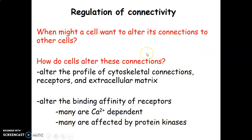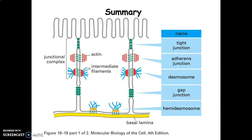Regarding regulation of connectivity: when might a cell want to alter its connections with other cells? Cells can alter the profile of cytoskeletal connections, alter their receptors and extracellular matrix, and alter the binding affinity of receptors. Many connections are calcium-dependent and are affected by protein kinases. Tight junctions seal neighboring cells. Adherens junctions attach onto actin filaments. Desmosomes contain desmogleins and desmocollins. GAP junctions contain connexins with pores allowing molecules to pass. Hemidesmosomes are on the basal surface of the cell.